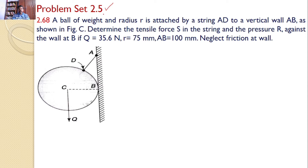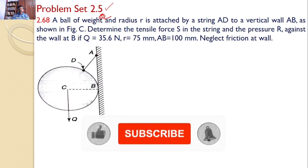A ball of weight Q and radius R is attached by a string AD to a vertical wall AB as shown in the figure. Determine the tensile force S in the string and the pressure R against the wall at B. If Q is equal to 35.6 Newtons, R is 75 mm and AB is equal to 100 mm, neglect the friction at wall. That means there is a ball which is pressed next to the wall and it is also connected by a string.